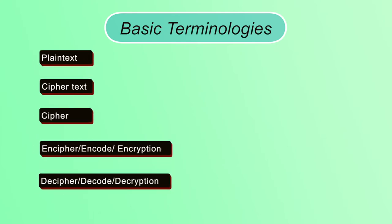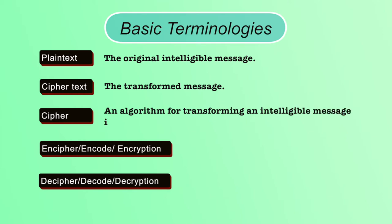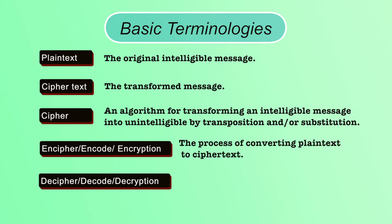Basic terminologies: Plaintext is the original form of the message which can be easily understood. Ciphertext is the converted form of the original message which cannot be understood by the attacker. A cipher is an algorithm for converting plaintext to ciphertext with the help of transposition and substitution ciphers. In substitution cipher, a block of plaintext is replaced by ciphertext; in transposition cipher, the letters of plaintext are shifted to form the cryptogram. Encipher, encoding, or encryption is the process of converting plaintext to ciphertext using the cipher algorithm.